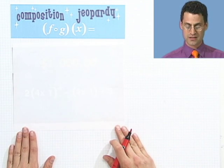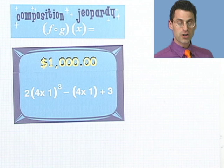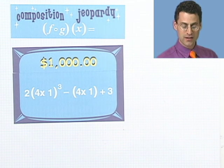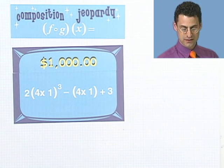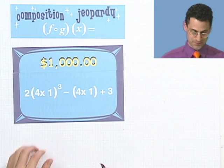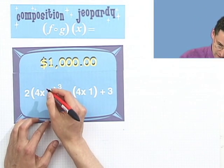Here we go, the big question for $1,000. Bling! Bling! Two times the quantity 4x. Oh, and there's a typo here, folks. It's OK. I can fix it live on the air.